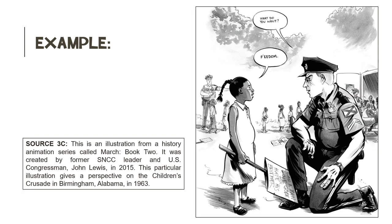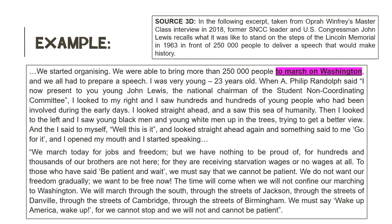Source B also tells us this caused a national outcry which gave more support for the Civil Rights Movement, and that they were successful in creating change in Birmingham. Source C is very similar to Sources A and B — the image indicates that the strategies used were non-violent, that children participated in the Civil Rights Movement, and that police arrested children. Source D tells us about the March on Washington as a strategy to end racial segregation, that this march was well supported and non-violent, and that it put a lot of pressure on the government to pass the Civil Rights Act.